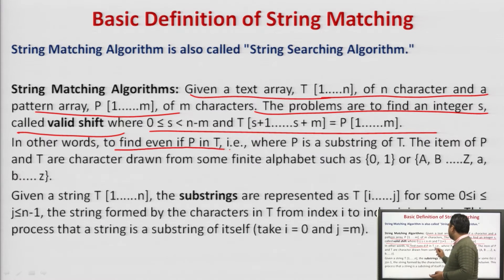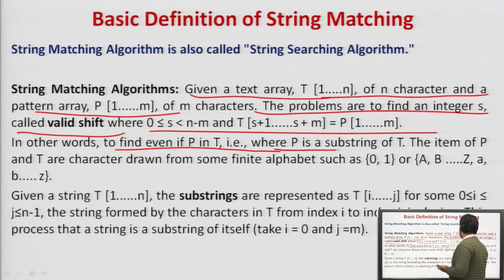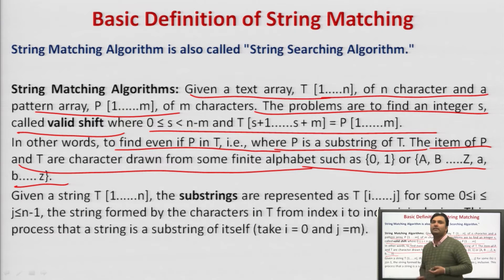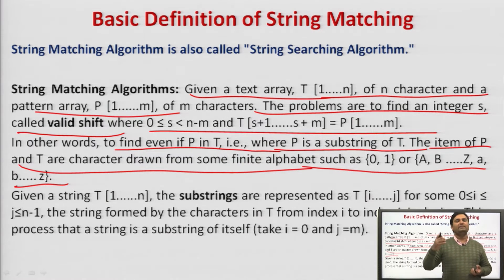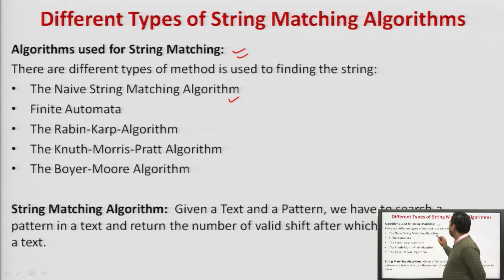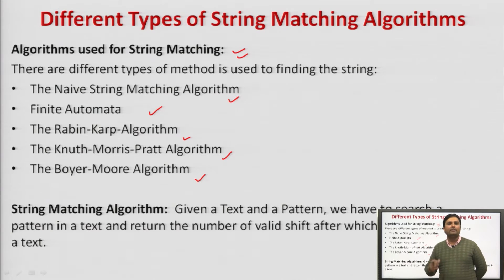In other words, to find pattern p in text t — pattern is a substring of the text. The items of p and t are characters drawn from some finite alphabet. So basically we are given a text, we are given a pattern, and we have to return the number of valid shifts required to match each and every character of a pattern with the text. The five basic algorithms for String Matching are: naive, finite automation, Rabin-Karp, Knuth-Morris-Pratt, and Boyer-Moore.